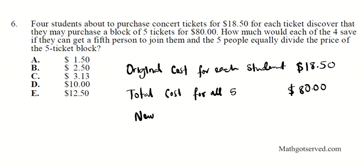So with this new option, how much will each student pay? Total cost for all 5 is $80. So the new cost for each is simply going to be the total which is $80 divided by the number of people that are going to get the tickets. So $80 divided by 5. If you divide that out, 5 goes into 8 one time and 5 goes into 30 6 times. So it's going to be $16. Each person is going to be paying $16.